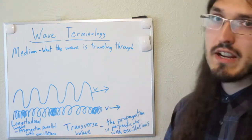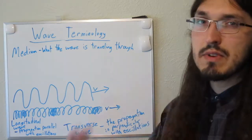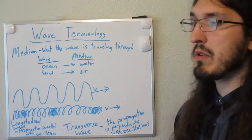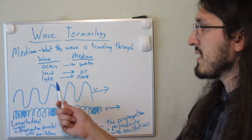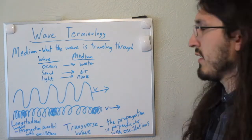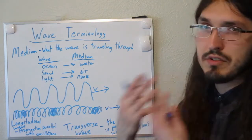For example, a water wave obviously requires water. Sound waves require air. And light waves actually don't require any medium at all. So light waves can travel through empty space, pretty much. They can travel through air as well. They can travel through liquids.